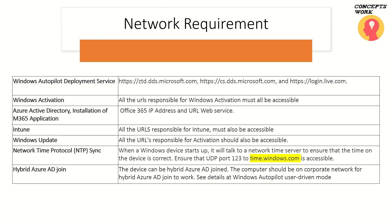The first network requirement is the Windows Autopilot deployment service endpoints — these must be allowed in your corporate network. If machines are being deployed over the internal network, ensure all required endpoints are whitelisted. The official documentation covers multiple endpoints and IP addresses that must be allowed; the links will be shared in the description. This table is intended to help you understand how different things are used for Windows Autopilot deployment.